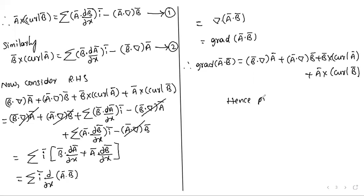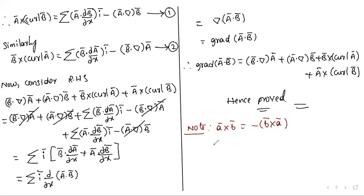This is a very important identity — learn it carefully. Note: Ā cross B̄ equals minus B̄ cross Ā, and Ā·(B̄ cross C̄) equals (Ā cross B̄)·C̄. The next identity is identity 6.